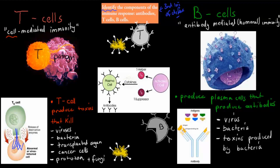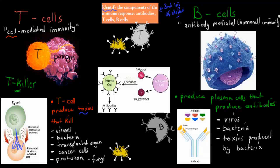So that's how T cells work, especially the T killer cells. This is the T killer cell — the one that actually kills. We're only going to cover the T killer cell in detail in this video, and cover the other ones in the next video. The T killer cell goes, hooks on, and kills the pathogen. The T cells produce toxins, and these toxins can kill a specific type of virus, a specific type of bacteria, transplanted organ tissue, cancer cells, and protozoan and fungi.